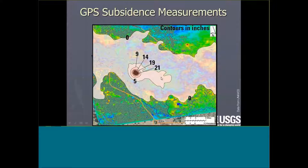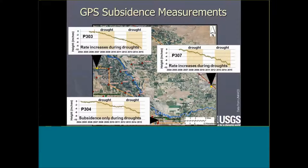GPS measurements are unfortunately not where we'd like them, but we have some on the edges that show interesting, varied data. P304, near Mendota, shows subsidence only during drought periods, pretty much flattening out between droughts, corresponding well to groundwater levels. P307, near Madera, shows subsidence rates that are essentially uninterrupted by drought — the same during droughts and non-drought periods. P303, near Los Banos, shows the same continuous pattern. This tells me that farms near P303 and P307 don't have much access to surface water, whereas farms near P304 apparently reduce pumping when surface water is available.